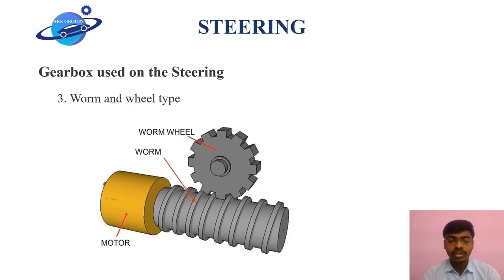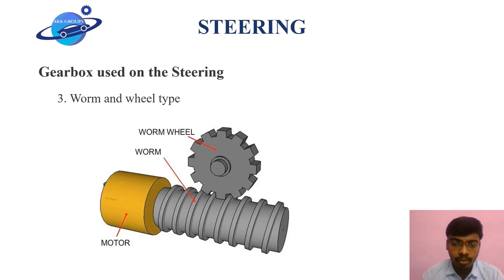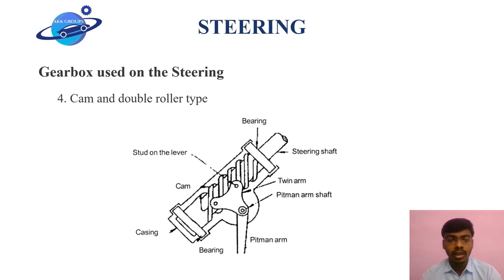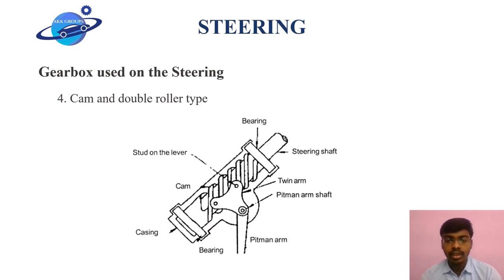The worm and wheel type is similar to rack and pinion, except that instead of a rack we use a worm wheel and worm shaft, which is directly connected to the steering. The fourth type, cam and double roller type, is the most rarely used mechanism. It requires a very complex design, more maintenance, and has a shorter lifetime compared to all other three mechanisms.